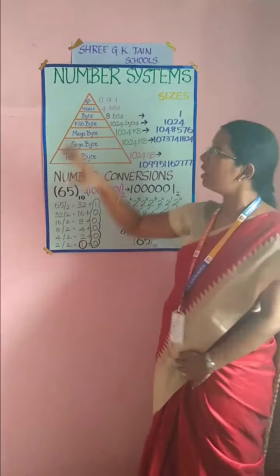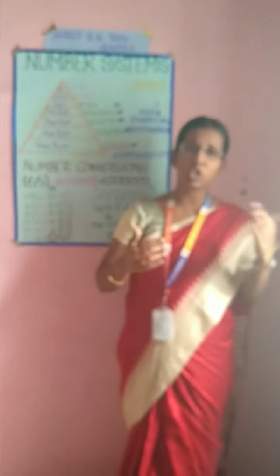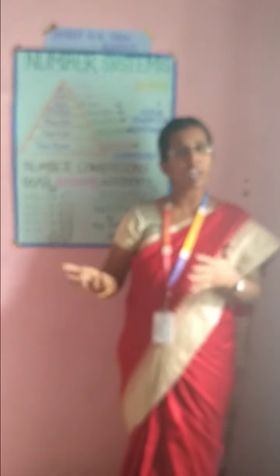Either a 0 or a 1 — that is one digit, either one 0 or one 1 — that tends to be a bit. Bit is nothing but binary digit. The short form of binary digit is bit.